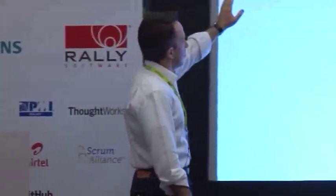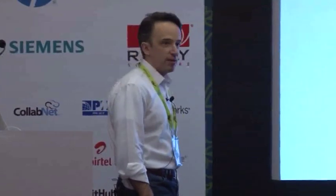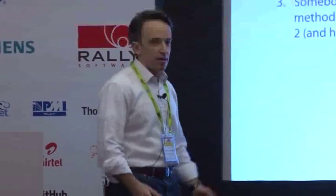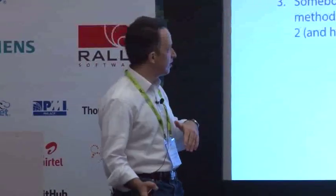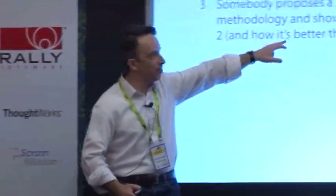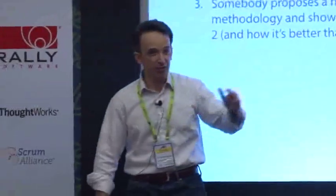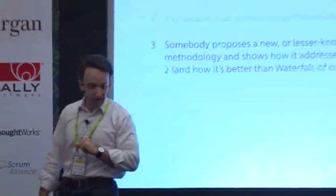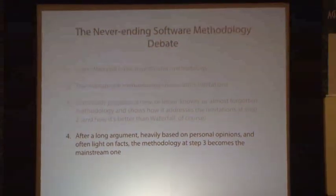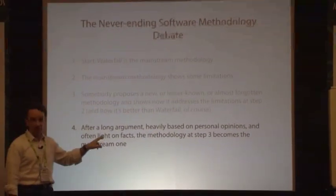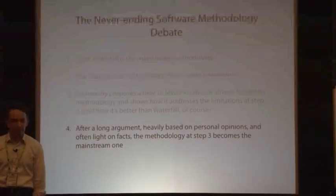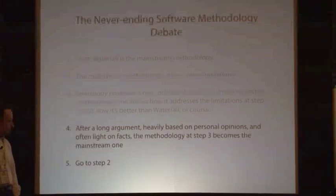The typical debate follows an algorithm. Step one: the year-zero methodology discussion is 1970 with Royce's paper about waterfall - waterfall is the mainstream methodology. Step two: the mainstream methodology shows some limitations. Step three: somebody proposes a new or lesser-known methodology, shows how it addresses those limitations and how it is better than waterfall. Step four: after a long argument heavily based on personal opinions and often light on facts, the new methodology becomes the mainstream one. Step five: go to step two.